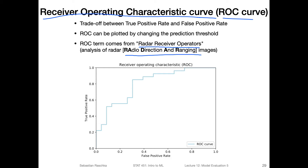The ROC curve looks at both the true positive rate and the false positive rate, and it is plotted by changing the prediction threshold. The ROC curve has the true positive rate on the y-axis and the false positive rate on the x-axis.